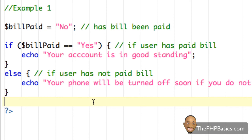I should also point out that the PHP code within the if block and the code within the else block cannot both be executed, because the if statement cannot be both true and false at the same time when it is evaluated. The phone service is either in good standing or it will be turned off soon — those are your only two options, and it cannot be both. That concludes this tutorial. Hopefully you now have a better understanding of PHP if-else statements. Be sure to take the online quiz at phpbasics.com, and I'll see you in the next video.